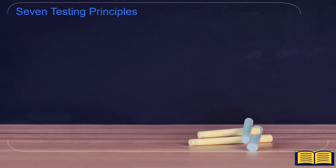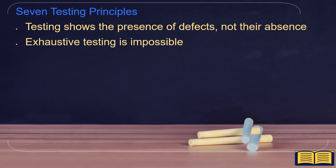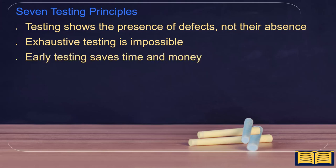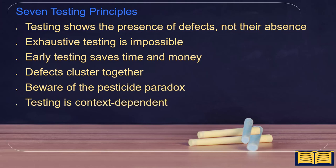We covered the seven testing principles: testing shows the presence of defects, not their absence; exhaustive testing is impossible; early testing saves time and money; defects cluster together; beware of the pesticide paradox; testing is context-dependent; and absence of errors is a fallacy.